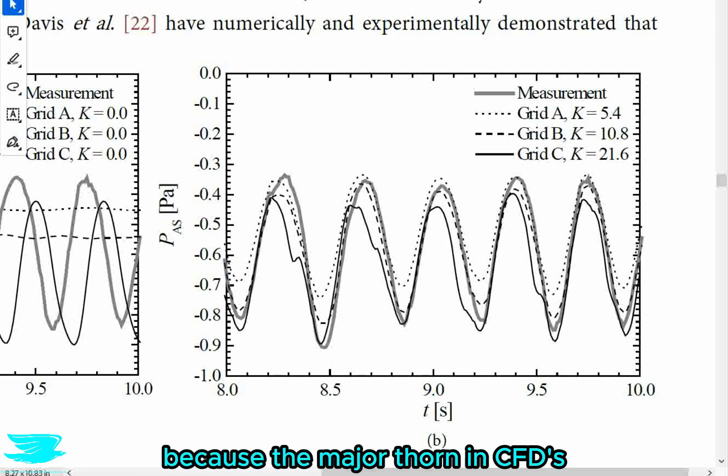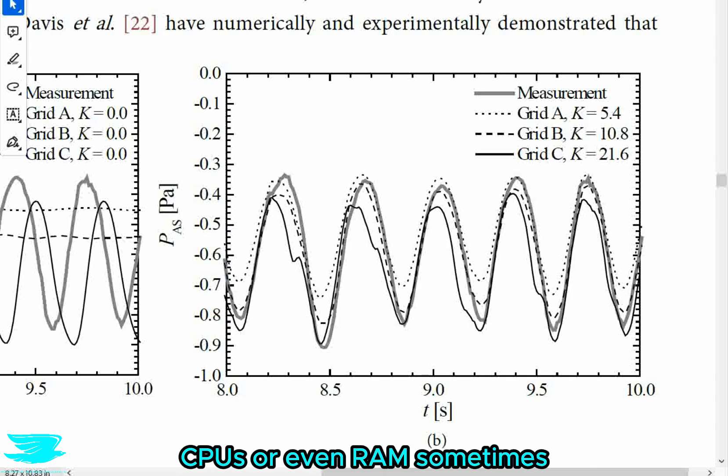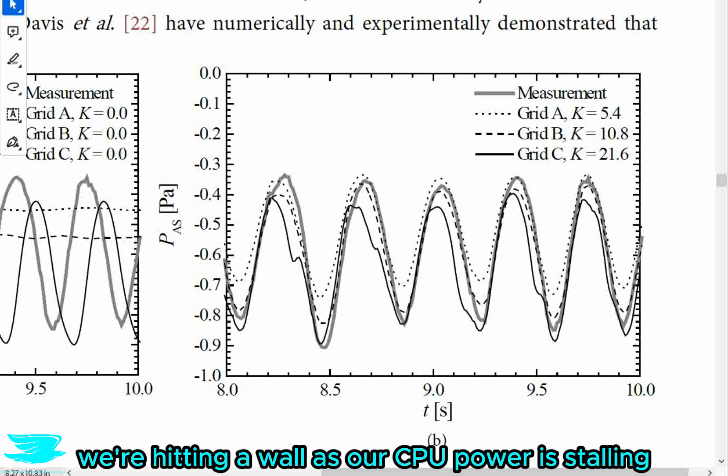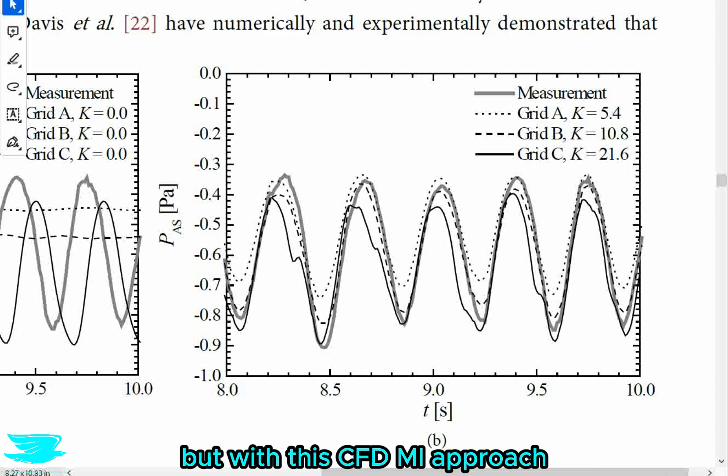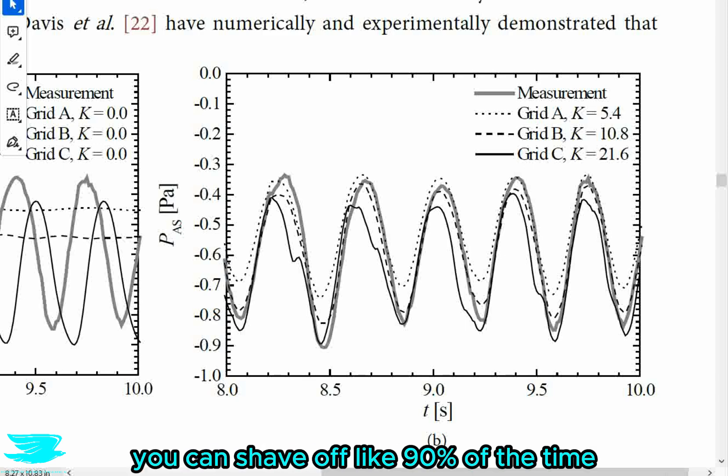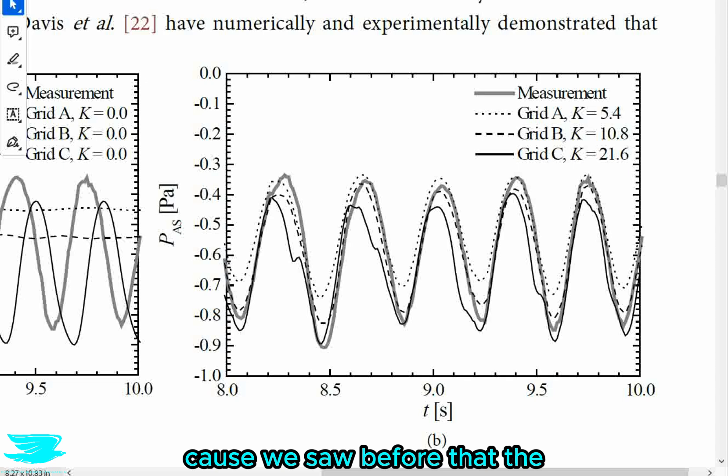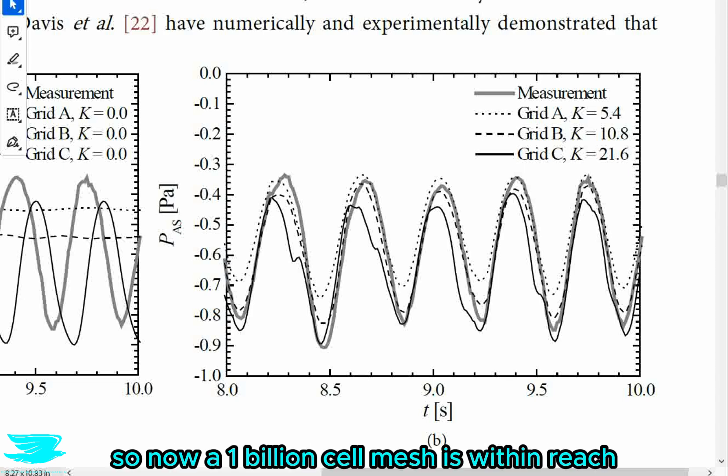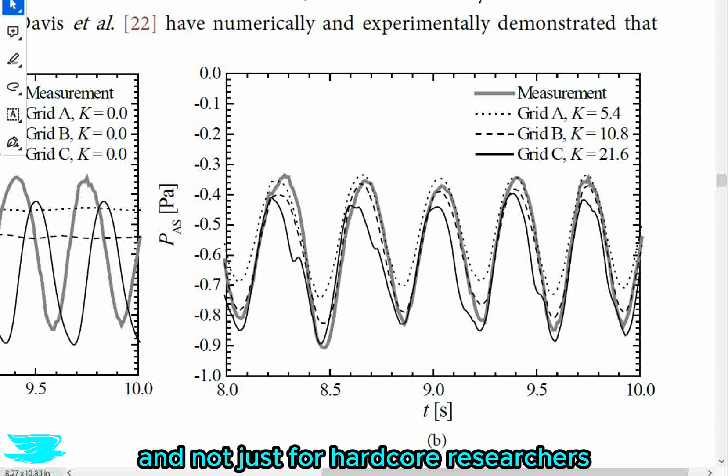So that right there is proof of just how powerful this CFD MI approach is. I mean, even for the coarsest mesh, which is only 40,000 cells, which is almost nothing, we get pretty decent results, all things considered. And this gives so much hope to CFD, because the major thorn in CFD's side is a lack of computational power. We don't have enough CPUs or even RAM sometimes, and in many fields, we're hitting a wall as our CPU power is stalling. But with this CFD MI approach, you can shave off like 90% of the time.